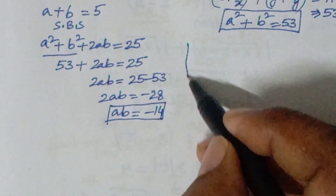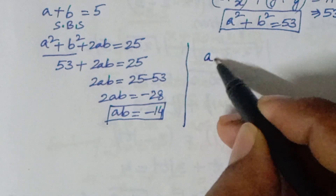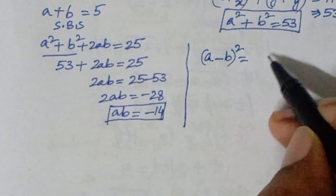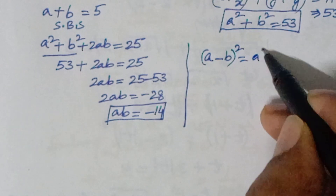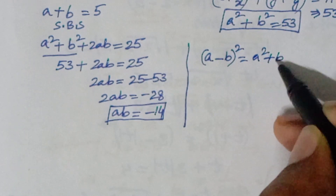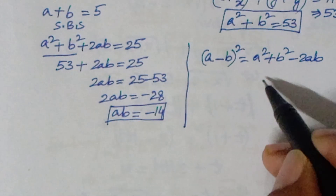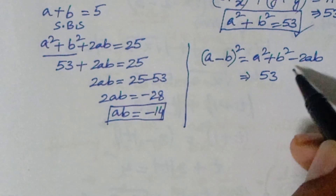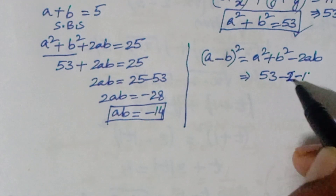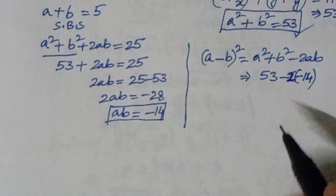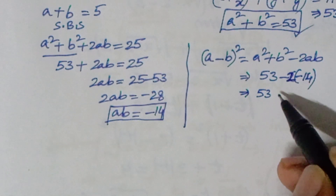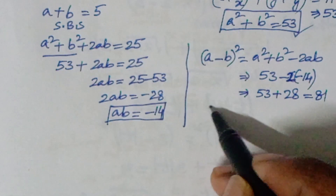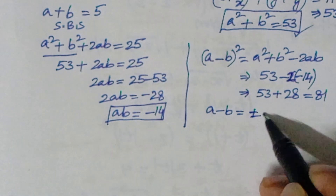Now to find (a - b)²: (a - b)² = a² + b² - 2ab = 53 - 2(-14) = 53 + 28 = 81.